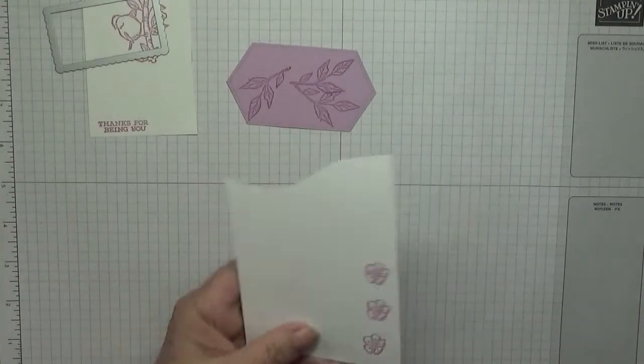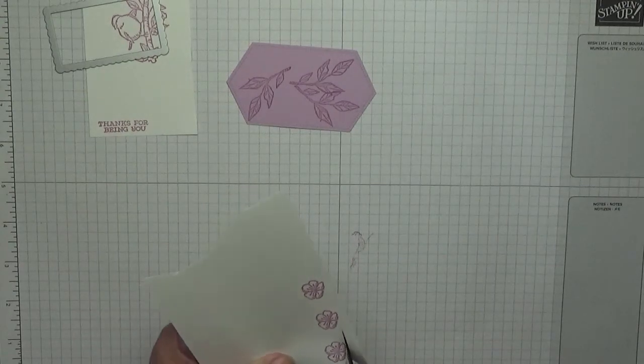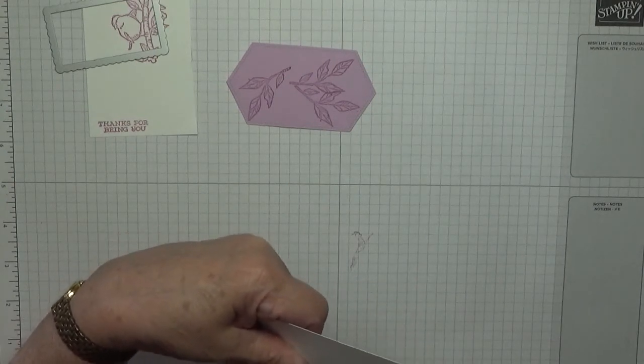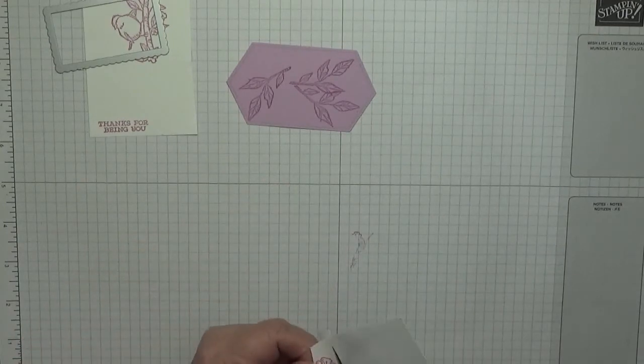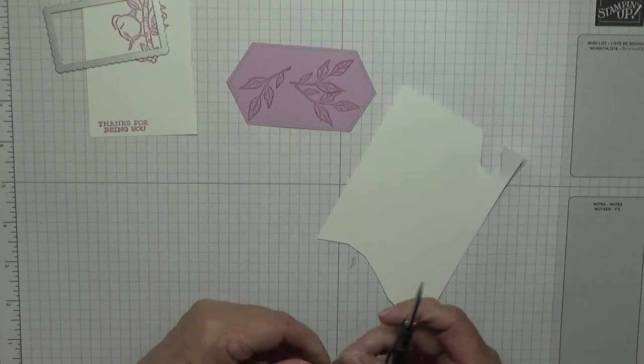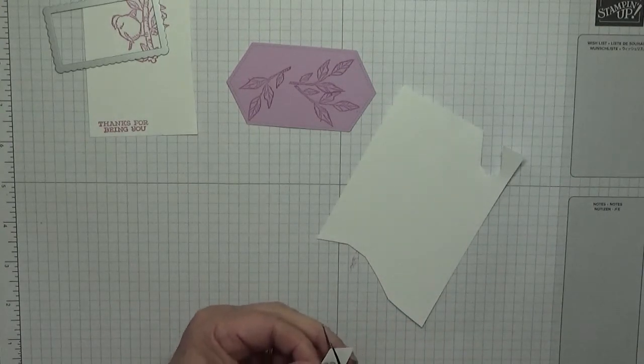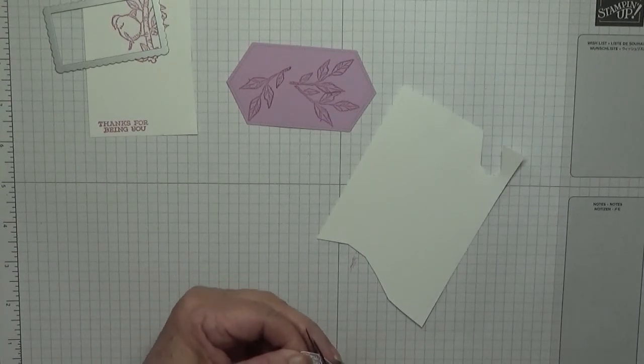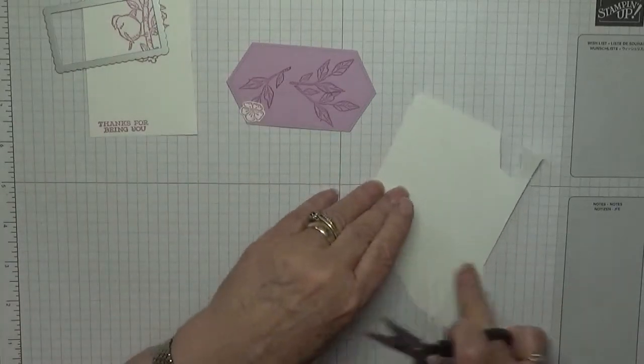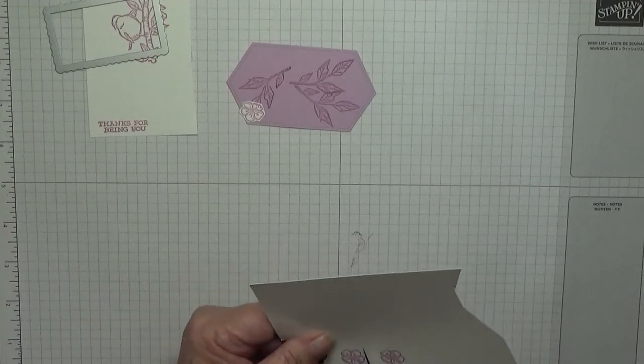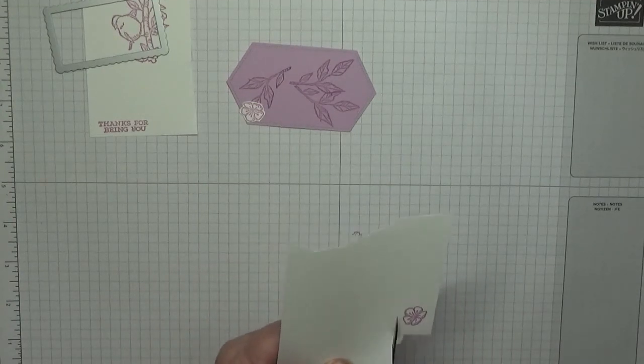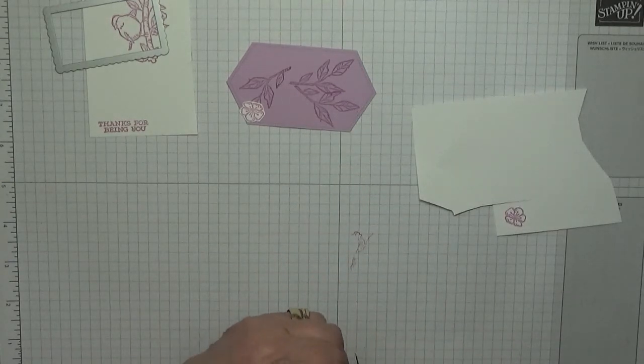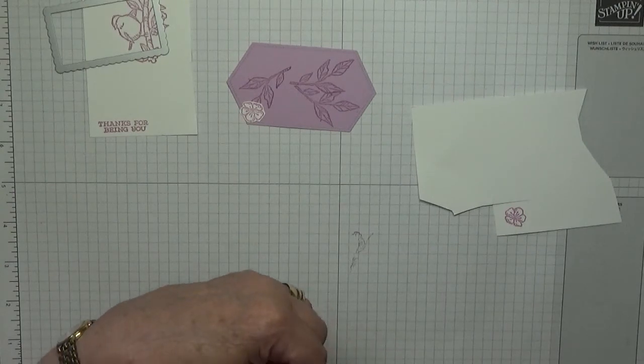With our scissors, just quickly cut around these flowers. I'm just leaving a white border all the way around.